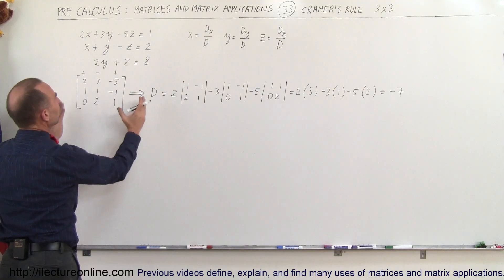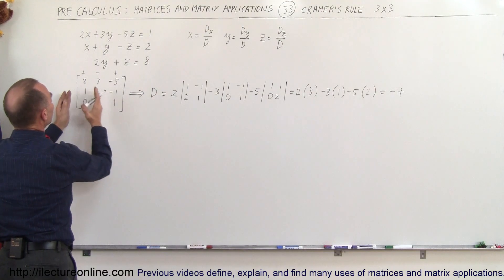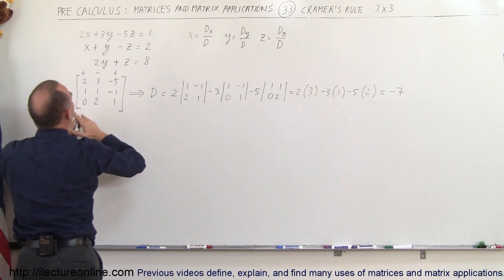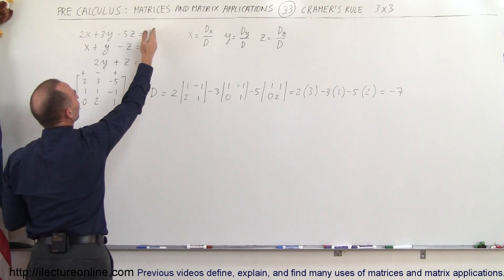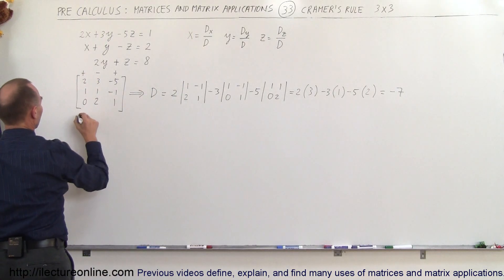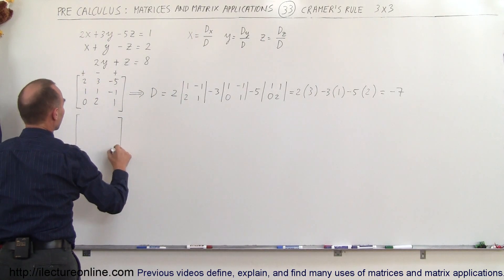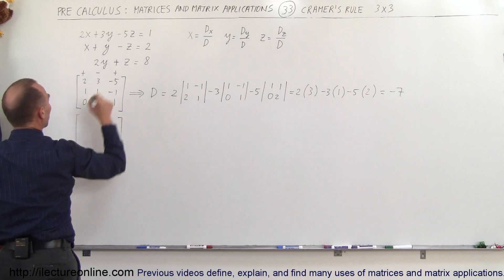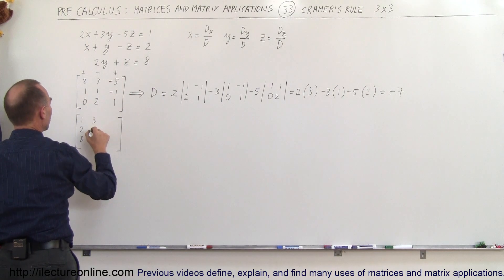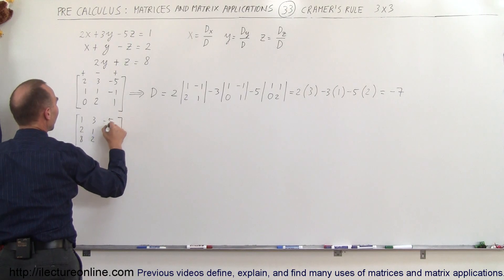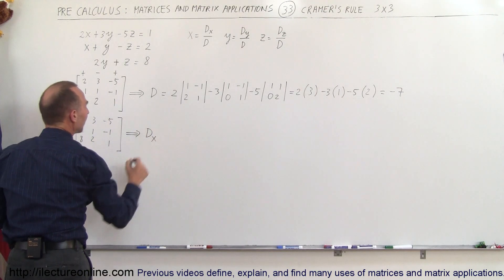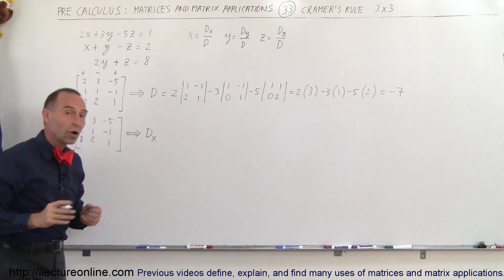The next determinant to find is d sub x. We do that by taking the x coefficients — 2, 1, 0 — and replacing them with the constants 1, 2, and 8. So we get the same matrix but with the first column replaced by 1, 2, 8, while the other columns remain 3, 1, 2 and minus 5, minus 1, 1. Now we find the determinant of that matrix, which we call d sub x.